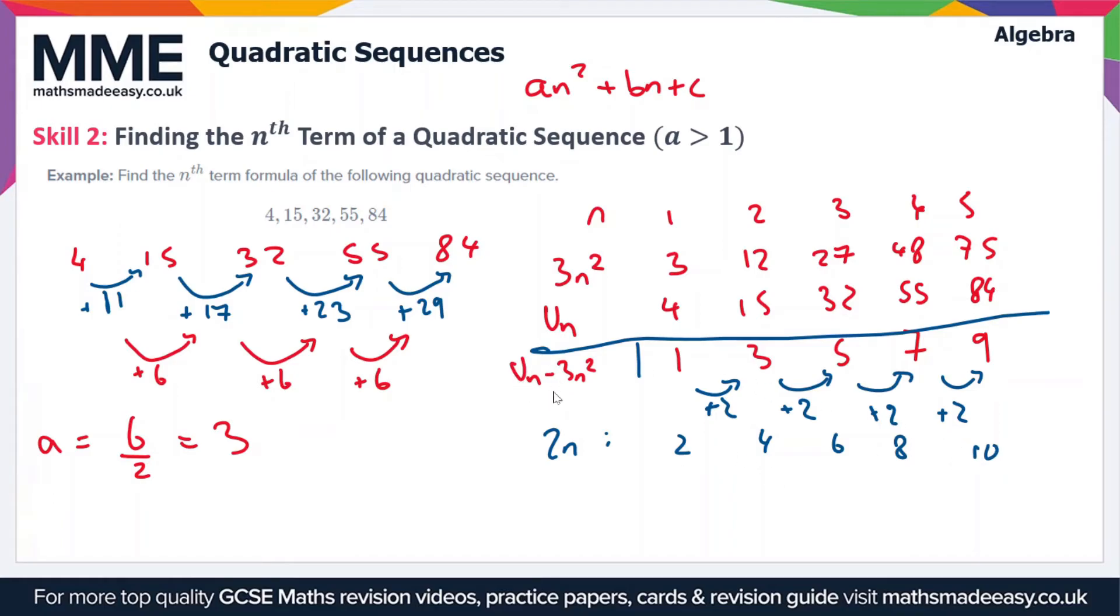So the difference between 2 and 1 is 1. The difference between 4 and 3 is 1 again. So essentially what we've got here is 2n minus 1. So that gives us the difference between the sequence 2n and the sequence un minus 3n squared. So now we've got all the pieces together to work out our nth term of the quadratic sequence that we started with.